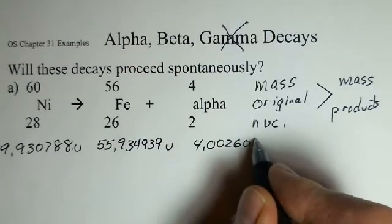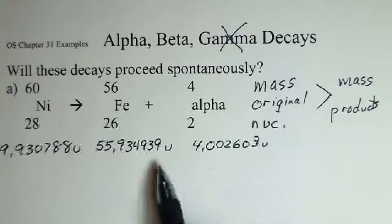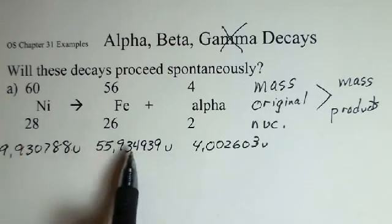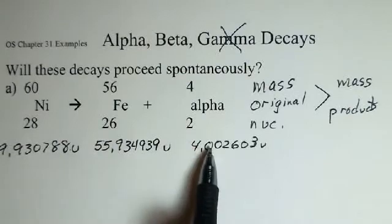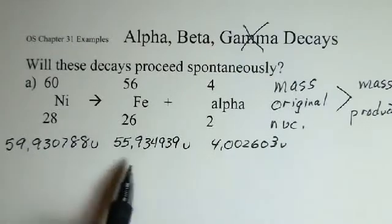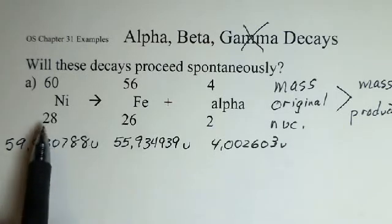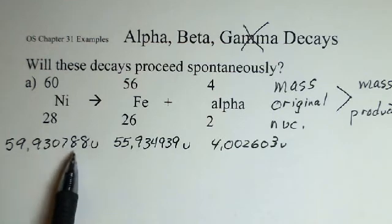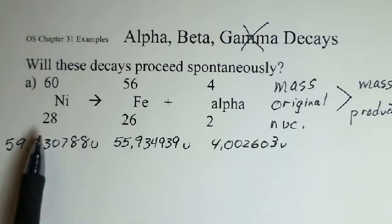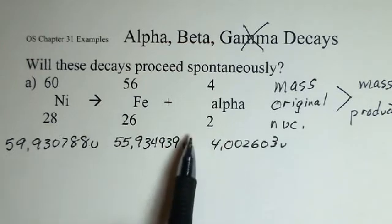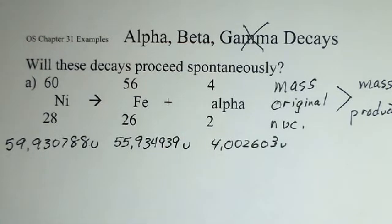The other thing to be aware of here, these are the masses of neutral atoms. So this mass includes 28 electrons, this mass includes 26 electrons, this mass includes two electrons. And that is fine that the electrons are included here, even though we're considering nuclear events in this situation, because we're going to be calculating mass difference. We'll have 28 electrons in here and this number, the mass, 28 electrons in this number. When we subtract, then the electrons have no effect on the result.